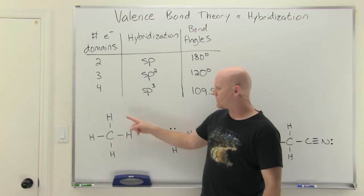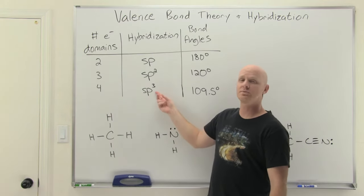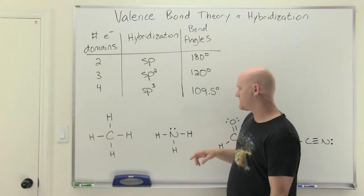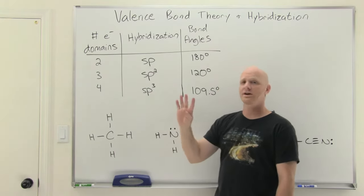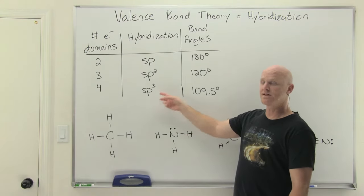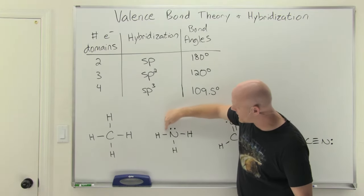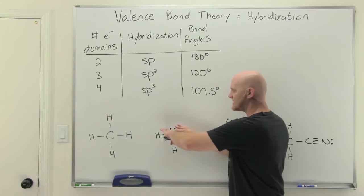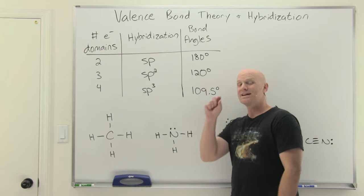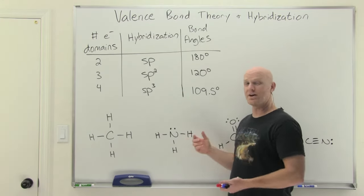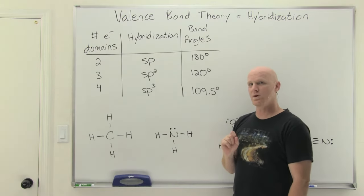For example, a carbon bonded to four different atoms with no lone pairs has four electron domains — its hybridization is sp3 and its bond angles are 109.5 degrees. Nitrogen with three bonded atoms and one lone pair also has four electron domains, so nitrogen is sp3 hybridized with bond angles roughly 109.5 degrees. However, the lone pair gives greater repulsion, scrunching the bond angles down slightly — about 107 degrees in the case of ammonia — slightly less than 109.5.